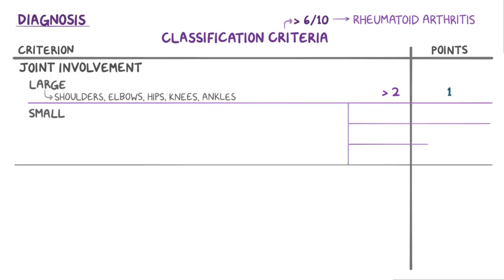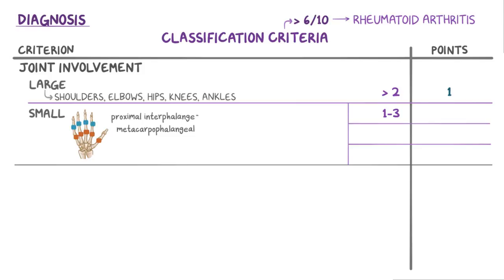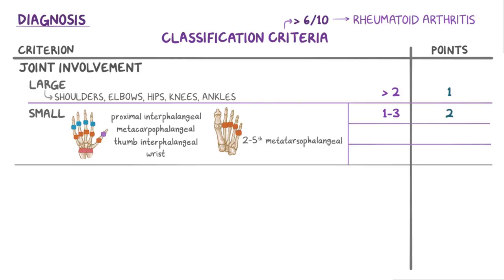Looking at the small joints, if at least one to three from among the metacarpophalangeal joints, proximal interphalangeal joints, second through fifth metatarsophalangeal joints, thumb interphalangeal joints, and wrists are affected, that gives two points. If four to ten small joints are affected, that gives three points. And if more than ten small joints are affected, that gives five points.